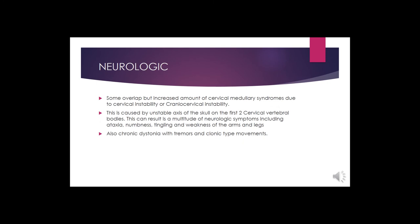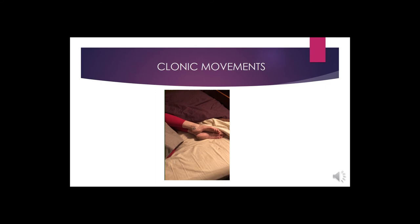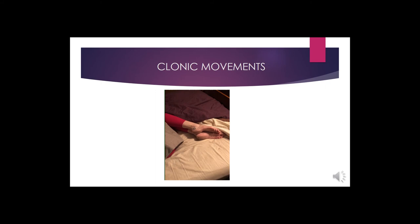Neurologic complications include cranial cervical instability — caused by unstable articulation of the skull with the first two cervical vertebrae — resulting in ataxia, numbness, tingling, and weakness of the arms and legs, as well as chronic dystonia with tremors and clonic movements. A video shows a patient at rest displaying chronic dystonia, illustrating the severity of neurologic involvement possible in hypermobile EDS.